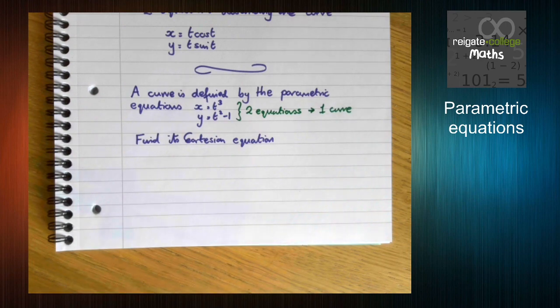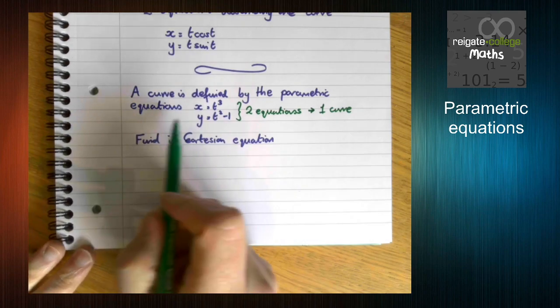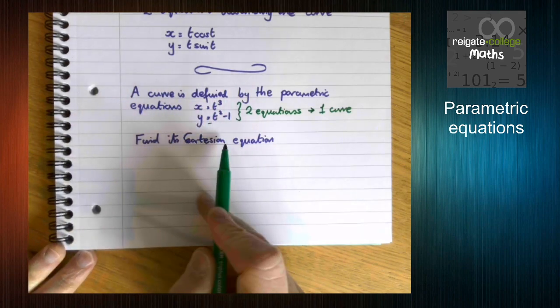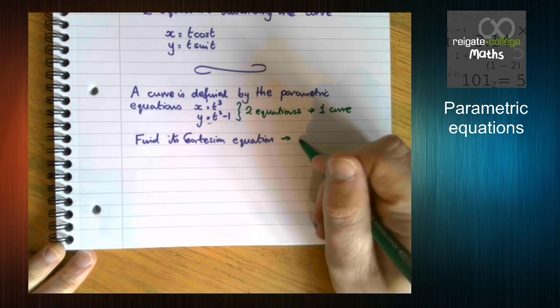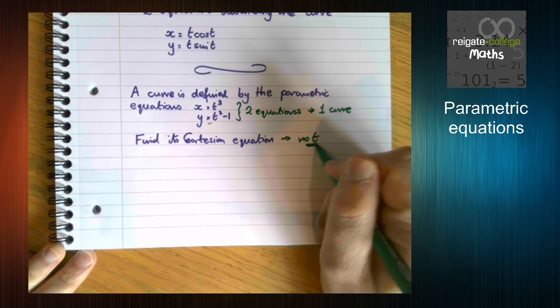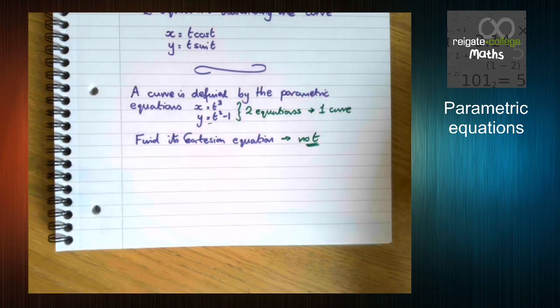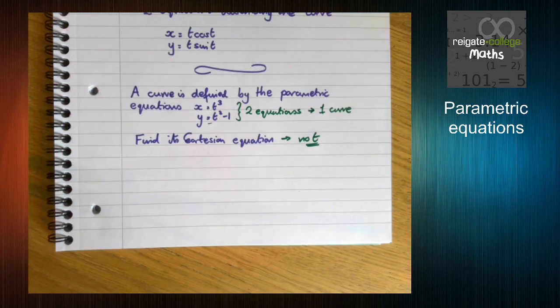So what do we need to do? Well, we're given parametric, we want its Cartesian. Cartesians have no t. So what we want to do is we want to substitute or rearrange to eliminate t in some way.